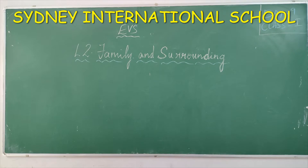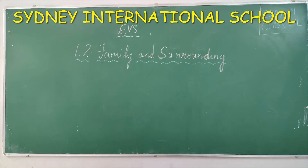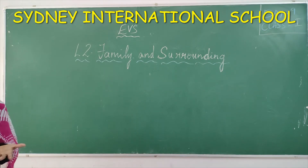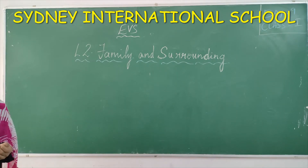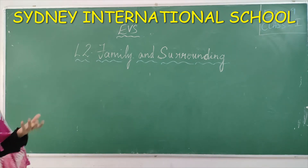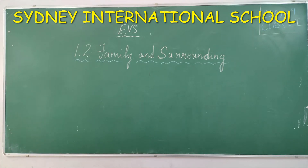Today we are going to start our video class on EVS. Our today's topic is family and surroundings. Before starting the lesson, I hope children you have understood what was explained in the previous class — we studied living things and non-living things. Living things are things which can breathe, move, reproduce, and eat. Things which cannot move, eat, or breathe are non-living things.